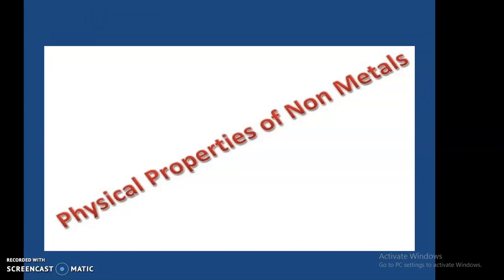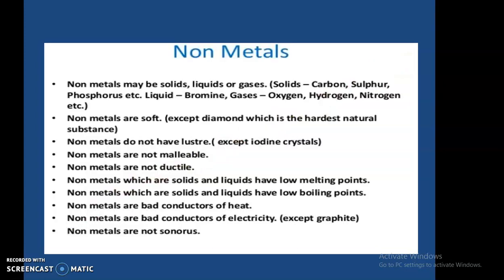Now let's talk about the physical properties of non-metals. Non-metals may be solids, liquids, or gases — 10 solids, 1 liquid (bromine), and 11 gases. Out of the 11 gaseous non-metals, five are non-reactive noble gases, which you will study in higher classes. Non-metals are generally soft, except diamond, which is the hardest natural substance.